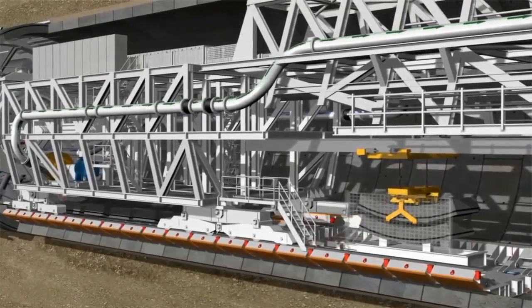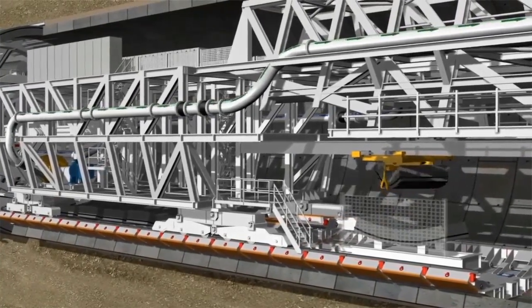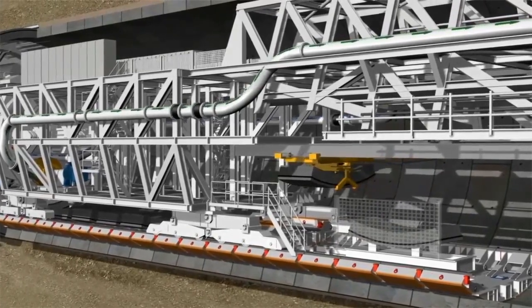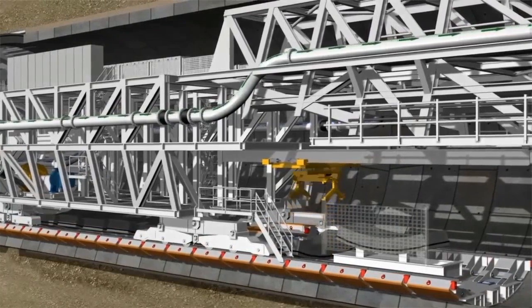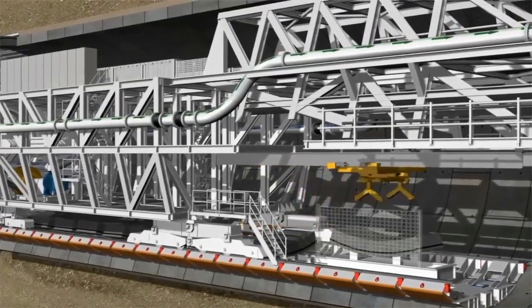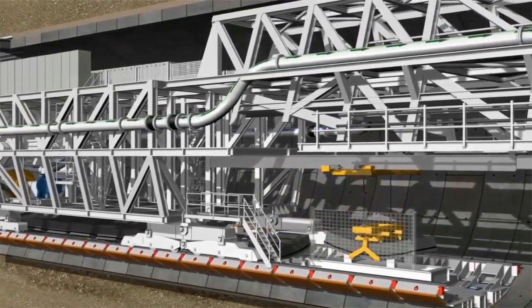The segments are lifted and turned by the transport crane and then positioned on the segment feeder. The segment feeder moves the segments under the first gantry to the erector and into the take-up position.